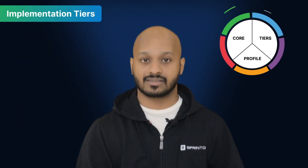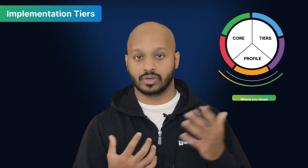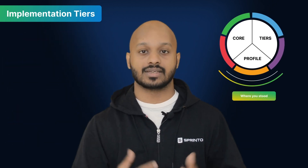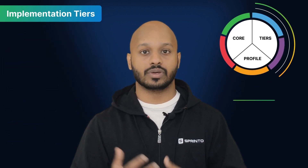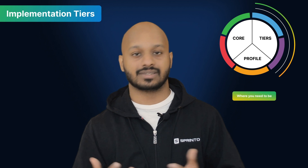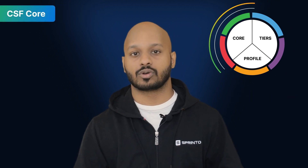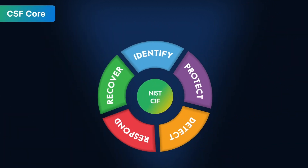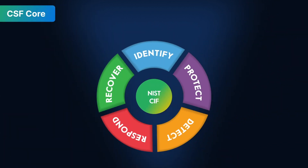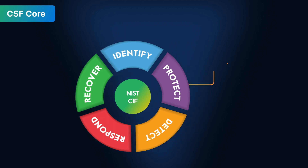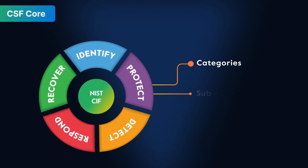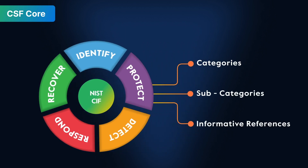So, the CSF Profile showed you where you stand. The CSF Implementation Tier showed you where you need to be. Now it's time for action: the CSF Core. The CSF Core consists of five basic functions, which are further broken down into categories, subcategories, and informative references.